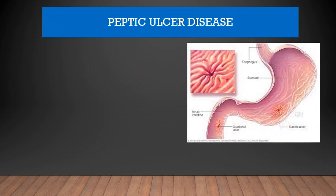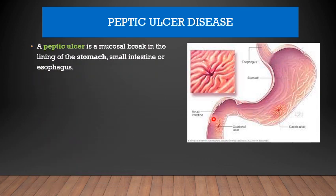We now come to Peptic Ulcer Disease. This diagram shows you the lower end of the esophagus, the stomach and the first part of the duodenum. This is the area where these ulcers occur and the ulcers are known as Peptic Ulcer. Peptic Ulcer is a mucosal break in the lining of the stomach, small intestine or the esophagus.